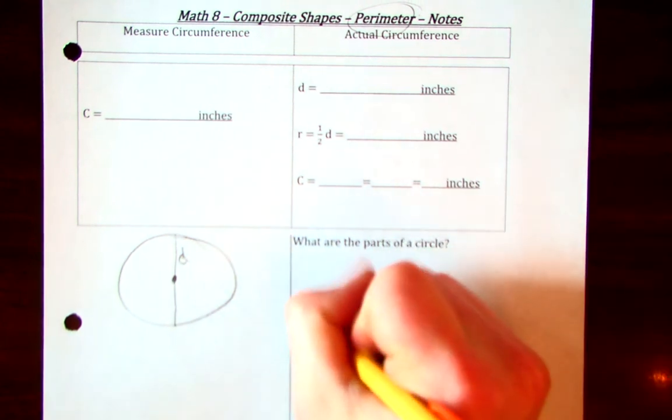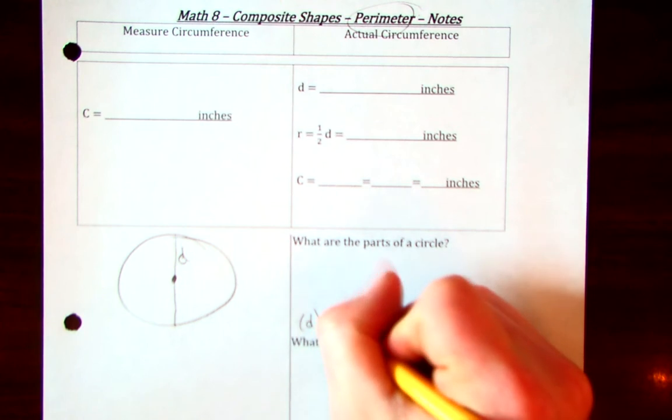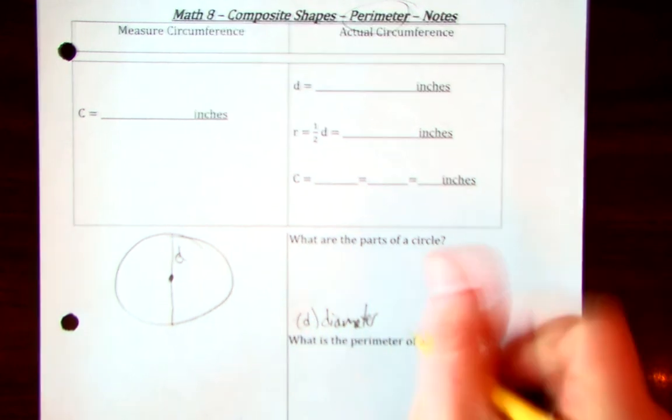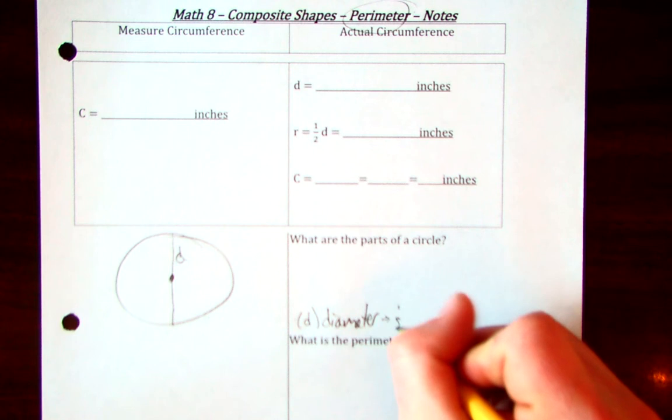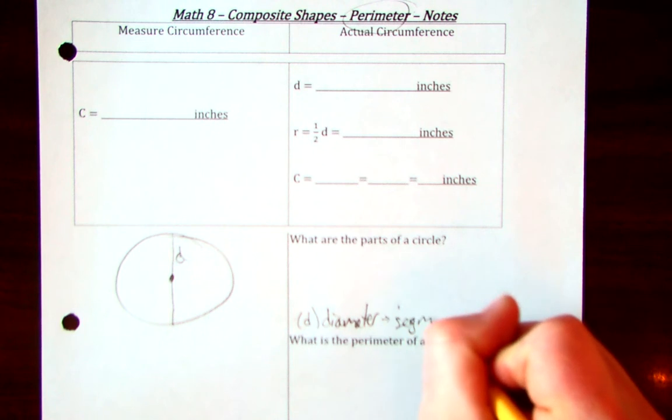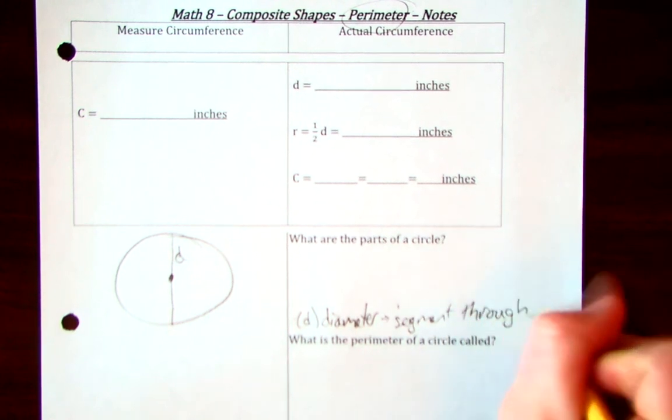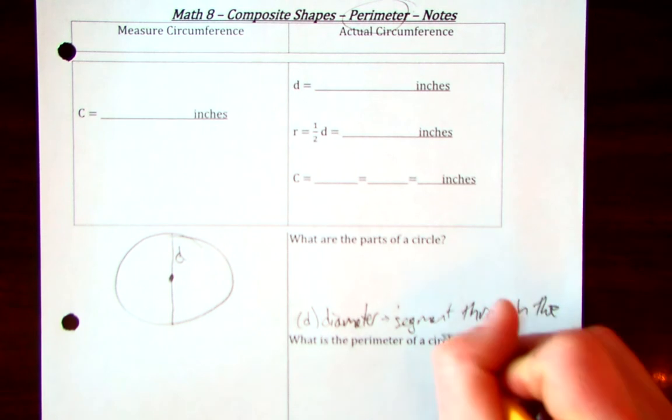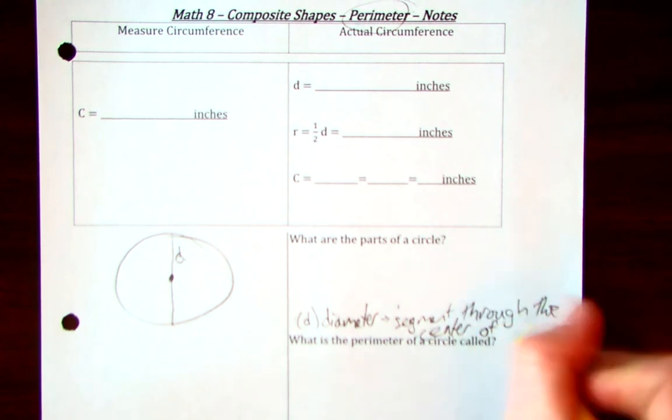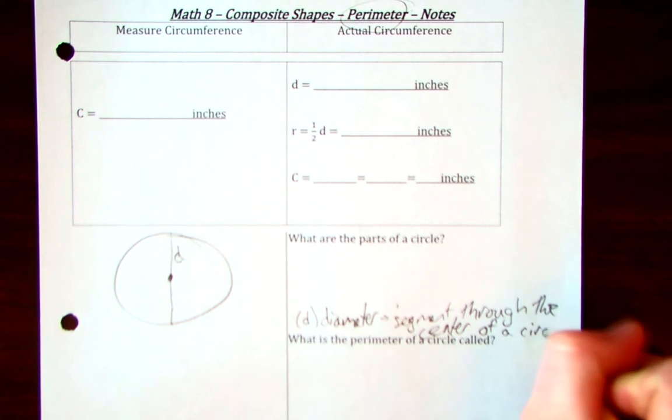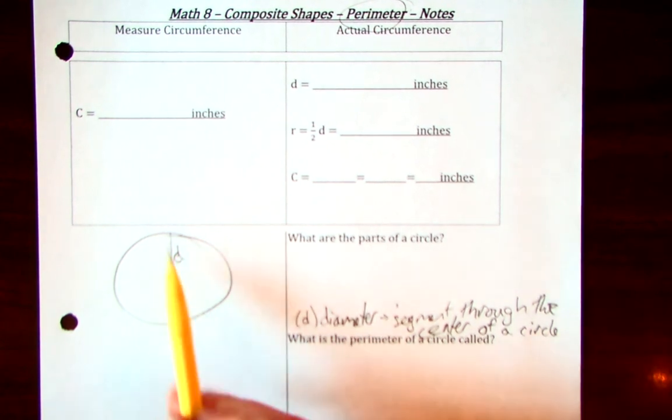We label that as D for diameter. That's the line segment through the center of a circle. That's that distance the whole way through.